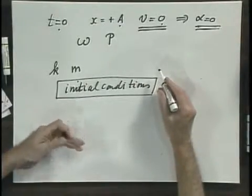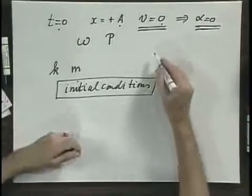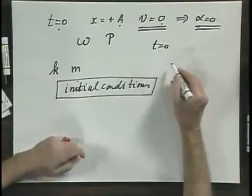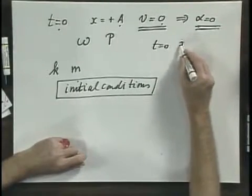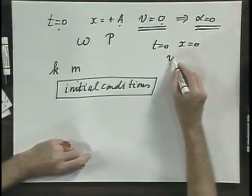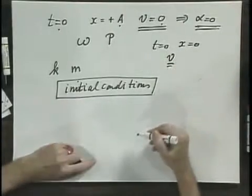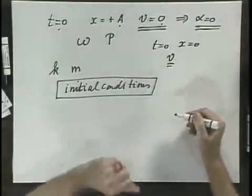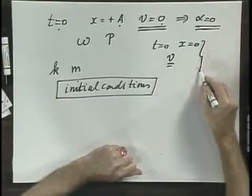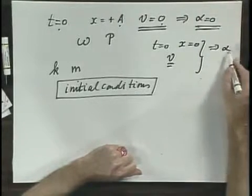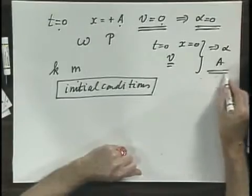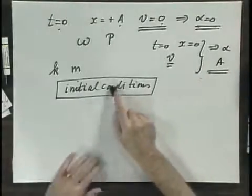You could also have released it at t equals zero. You could release it at x equals zero and give it a certain speed v, just give it a kick. Well, then out of this information would follow both alpha and A. So that's why we call them initial conditions.